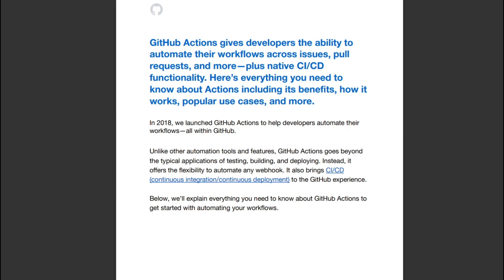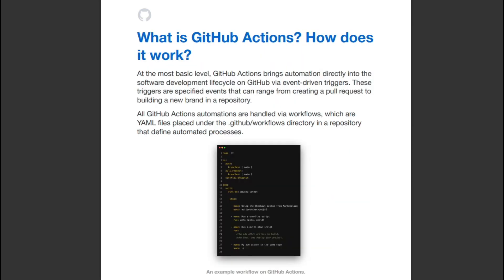So, what is GitHub Actions and how does it work? At the most basic level, GitHub Actions brings automation directly into your software development lifecycle on GitHub via event-driven triggers. These triggers are specified events that can range from creating a pull request to creating a new branch in your repository. Triggers are classified into pull request, push request, and creating a new branch.